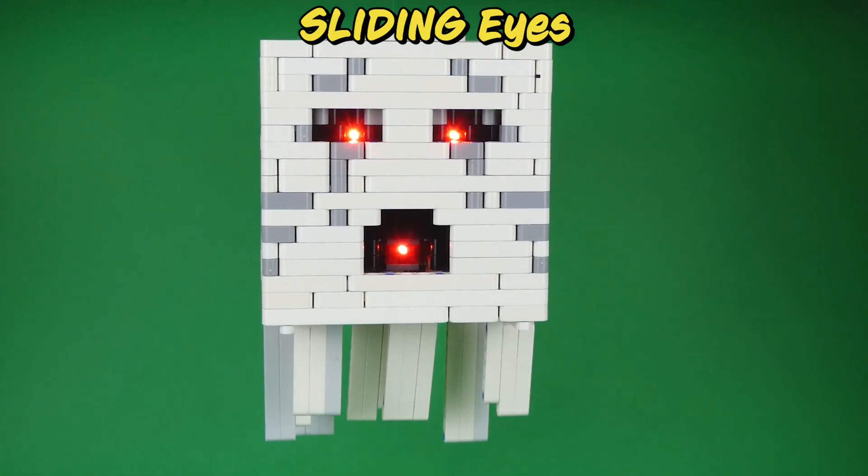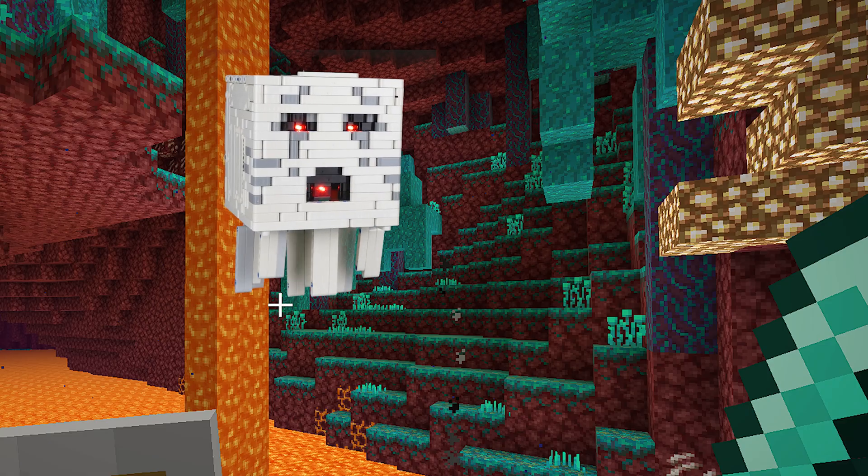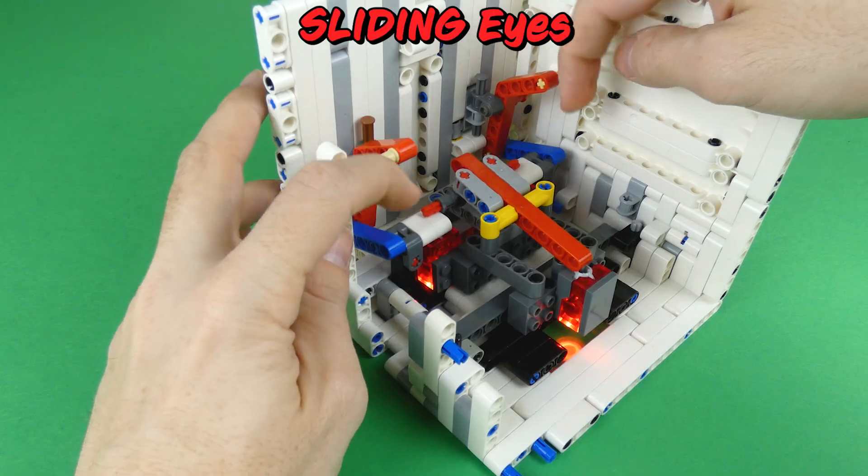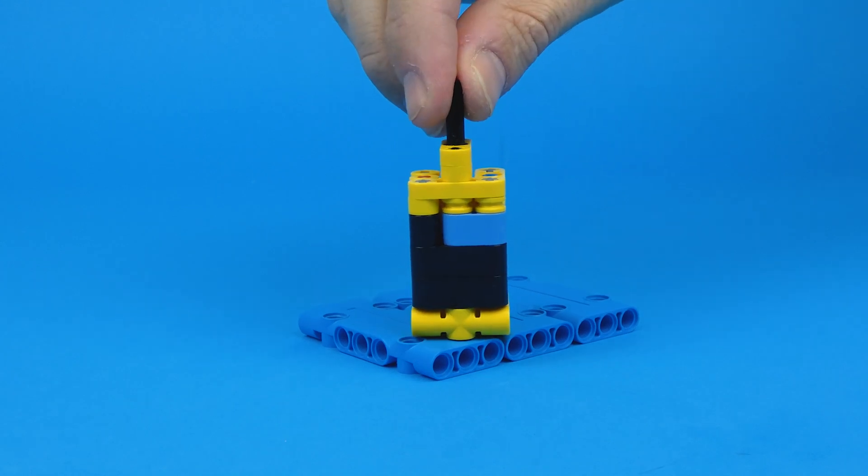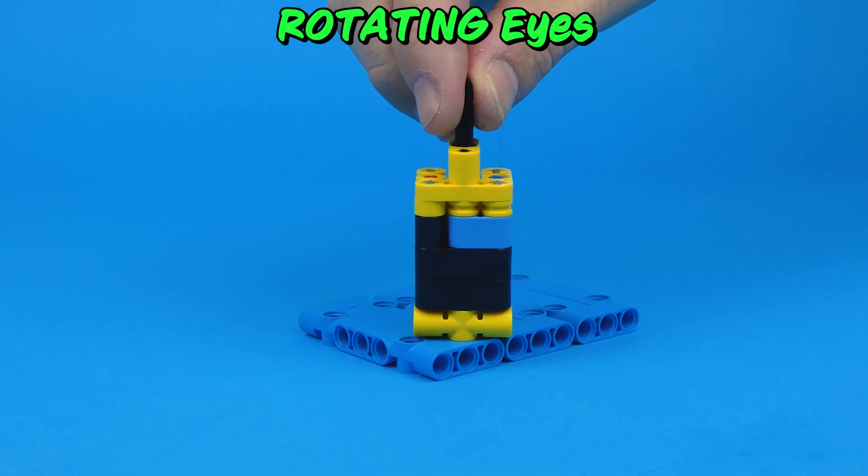Sliding eyes worked great on the ghost, but not on the Bee, since eyes were huge. Quick test of rotating eyes looked very promising, but clearly needed improvements.